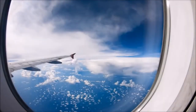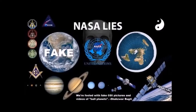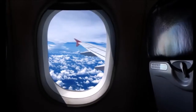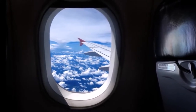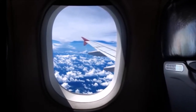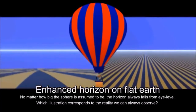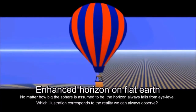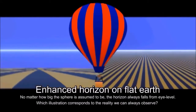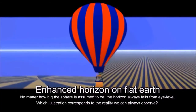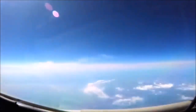The only time we ever see curvature is from NASA's fake CGI images or fish-eye lenses on GoPro cameras. Many who claim to have seen the curve from an airplane window must consider the curved glass and the fact that the horizon rises to the eye level of the observer. On a ball, the horizon would drop from eye level as the plane rises, but that doesn't happen. Instead, the horizon always rises to eye level, which is impossible on a globe and is only consistent with a flat plane.